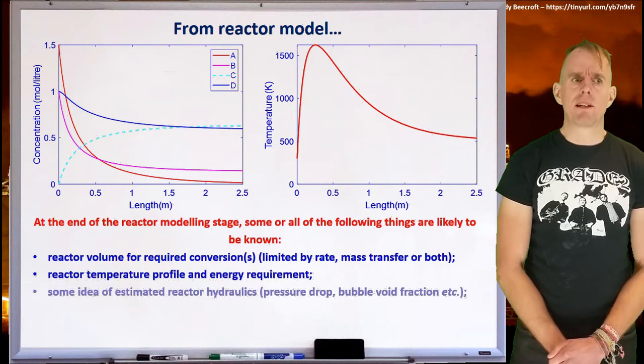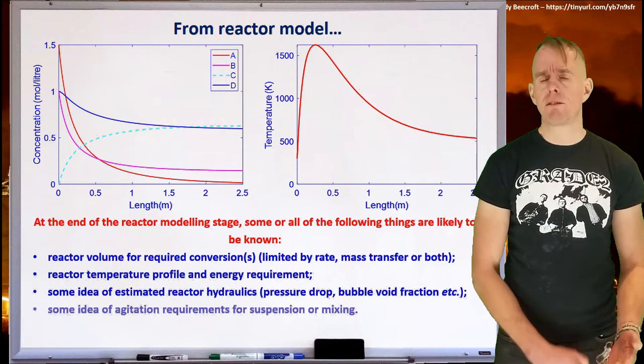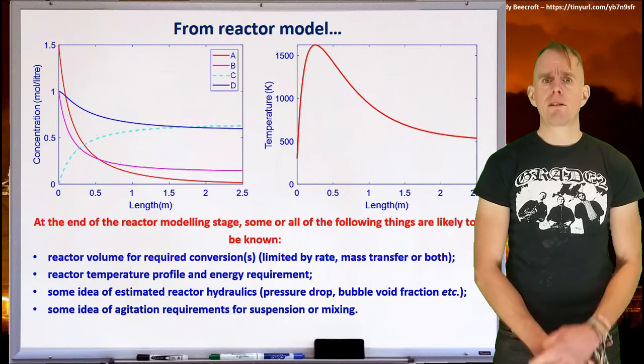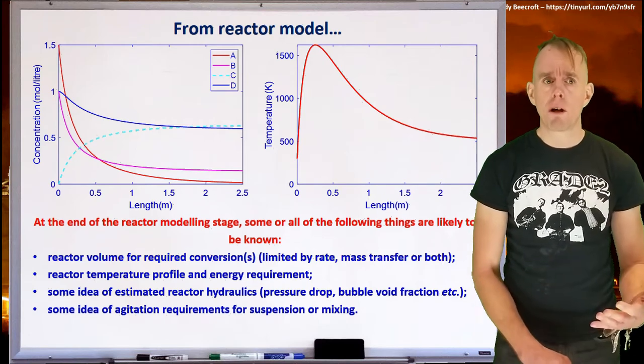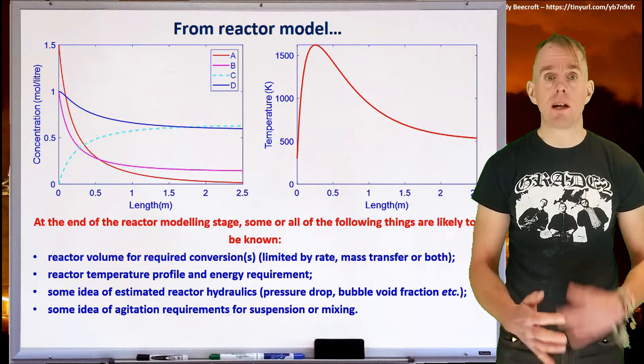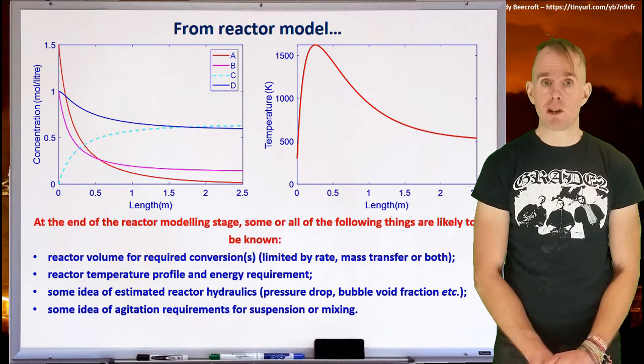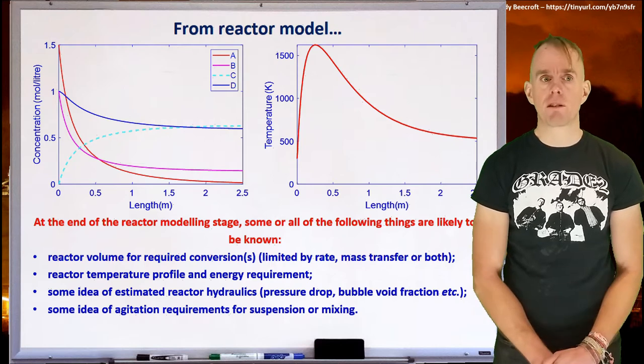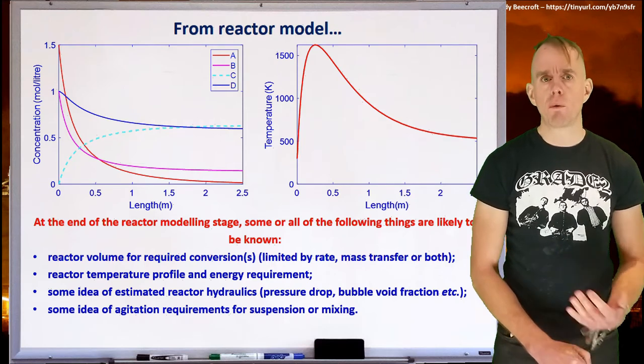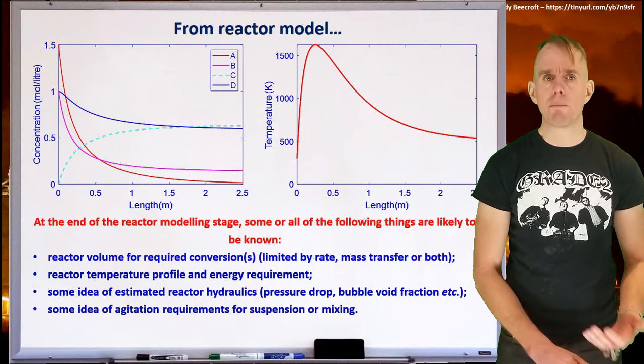The other sorts of information we'll find is that we'll know the reactor temperature and the reactor energy requirement. We'll have some estimate of the reactor hydraulics, be that just a pressure drop, or in the case of a multi-phase system, possibly a bubble void fraction, since that's a required piece of information to calculate the mass transfer characteristics. We may also have made the decision as to whether or not the system requires agitation or mixing.